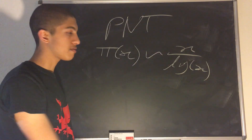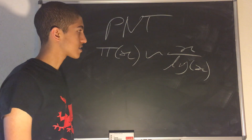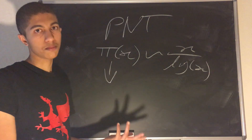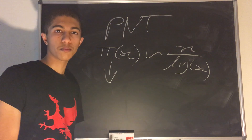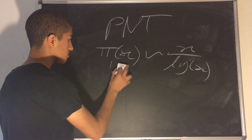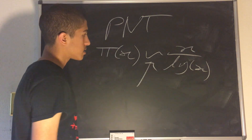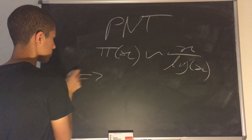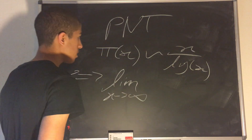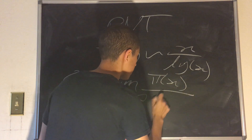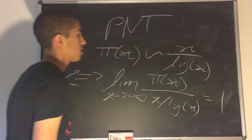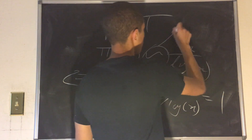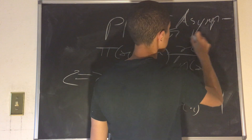Now what does this mean? The tilde sign is not an approximation exactly — this statement π(x) ~ x/log(x) is equivalent to saying that the limit as x tends to infinity of π(x) over (x / log x) equals 1. So as x approaches infinity, these two are asymptotic. That is what the tilde sign means — asymptotic. This is the famous prime number theorem.